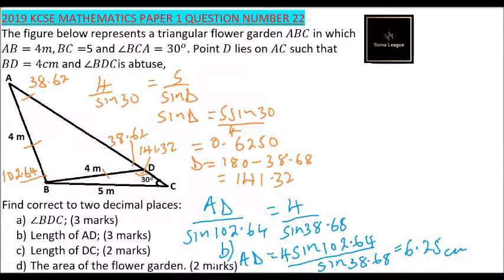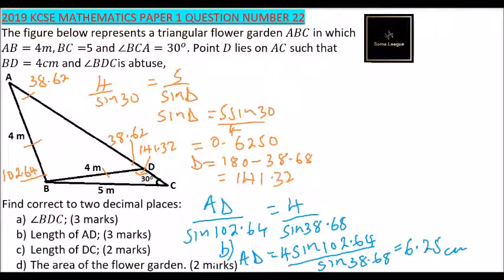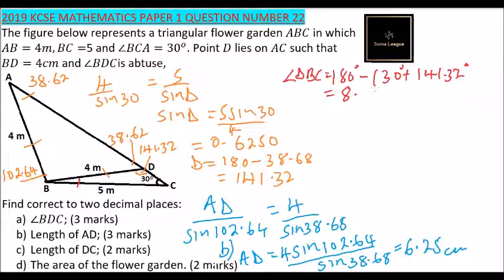Part C, we are told to find length of DC. We can get the length of DC by finding this angle, which is 180 minus 30 plus 141.32 degrees. The angles add up to 180, and you will get 8.68 degrees.